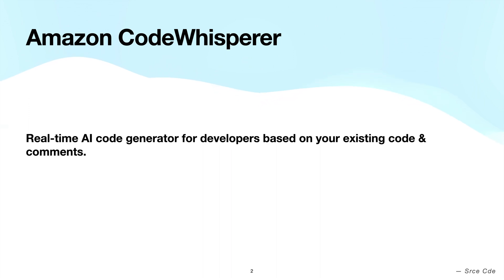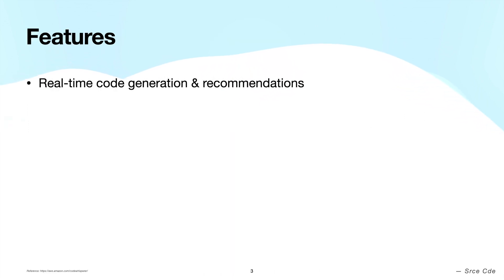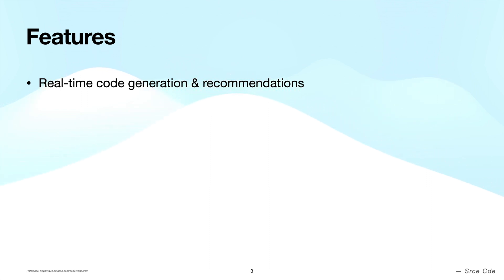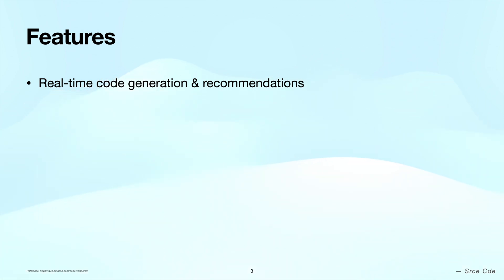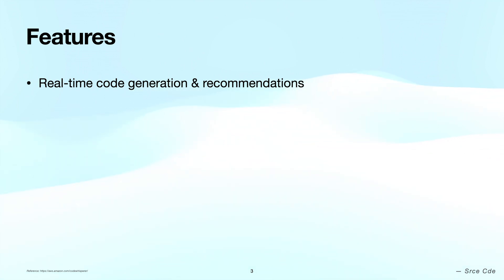CodeWhisperer comes with a number of features. The first one is real-time code generation and suggestions based on the context of surrounding code and comments within your IDE. It can also generate code snippets based on comments — for example, when you type a comment like 'a function process_csv to extract the date of birth field and return it as a list,' it will suggest a function that fulfills that task, and you can accept or reject that suggestion.